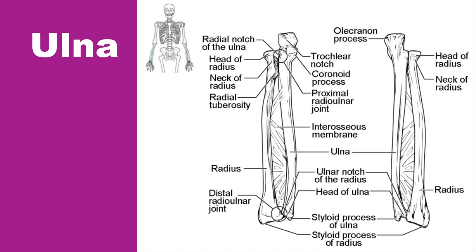More distal is the shaft of the ulna. The lateral side of the shaft forms a ridge called the interosseous border of the ulna, which is the line of attachment for the interosseous membrane of the forearm — a sheet of dense connective tissue that unites the ulna and radius bones. The small rounded area that forms the distal end is the head of the ulna. Projecting from the posterior side of the ulnar head is the styloid process of the ulna, a short bony projection that serves as an attachment point for the connective tissue structure that unites the distal ends of the ulna and the radius.